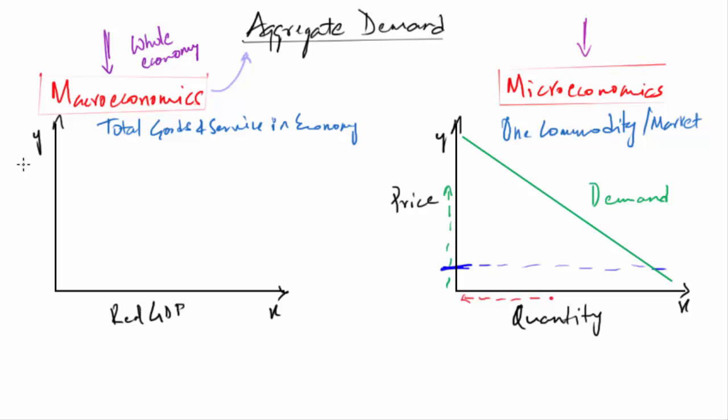Now on the y-axis we have price level. Again the aggregate demand curve will be a downward slope from left to right. What this interprets is when the general level of price in the economy is high, the demand for goods and services in the economy will be low. And if the demand is low then the value of goods and services will fall. That will certainly bring down the GDP.